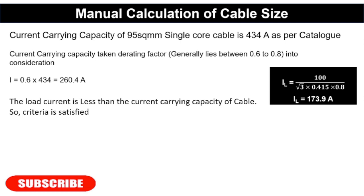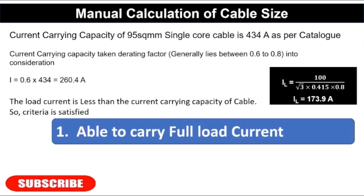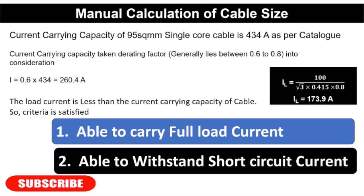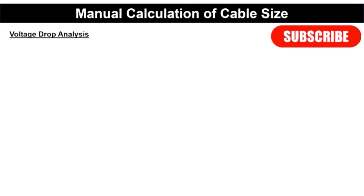So two criteria are now satisfied. First, the cable is able to carry the full load current — the cable has a current rating of 260.4 amperes and our load current is 173.9 amperes. Second, the short circuit current criterion is also satisfied, as the 95 mm² cable withstands 9 kilo-amperes. Now we check whether the voltage drop criterion is satisfied.